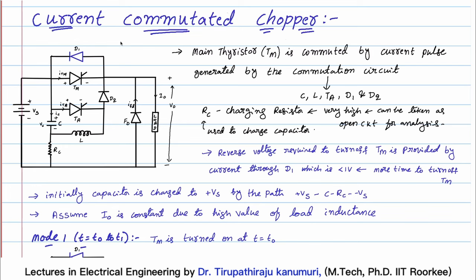Because in this case the commutation process of the main thyristor, which I am representing by Tm, is happening due to the current pulse that is generated by the commutation circuit. The commutation circuit includes the capacitor C, inductor L, D2, D1, and auxiliary thyristor.